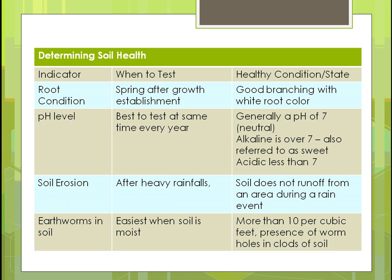Soil erosion — after rainfall you'll have less soil. What you want is for soil not to run off during a heavy rain event. Another good indicator of soil health is the presence of earthworms — if you dig up some soil, turn it over, and see earthworms, you know it's good. Earthworms create holes as they move through the soil, allowing water to stay and percolate slowly — very beneficial. The general rule of thumb is that more than 10 earthworms per cubic foot indicates very good soil health.